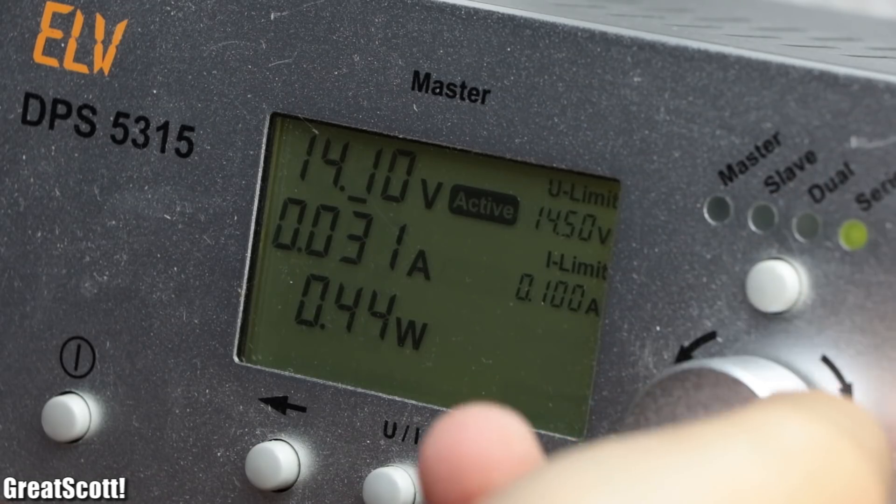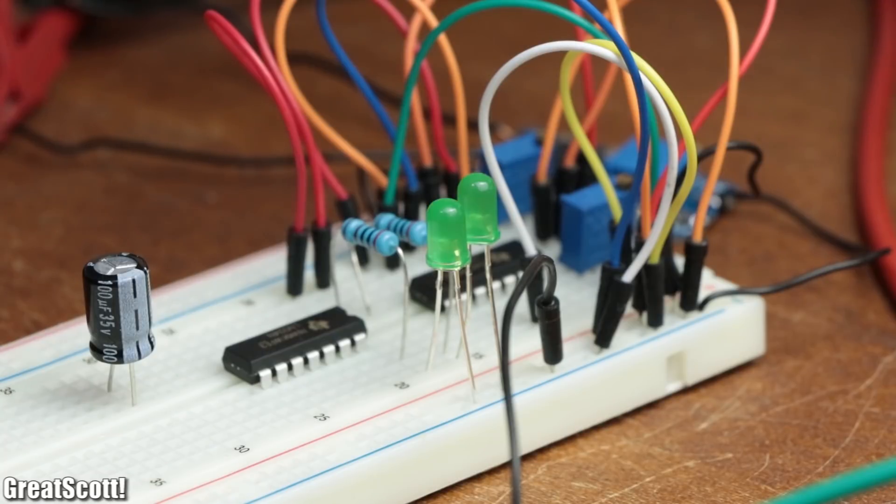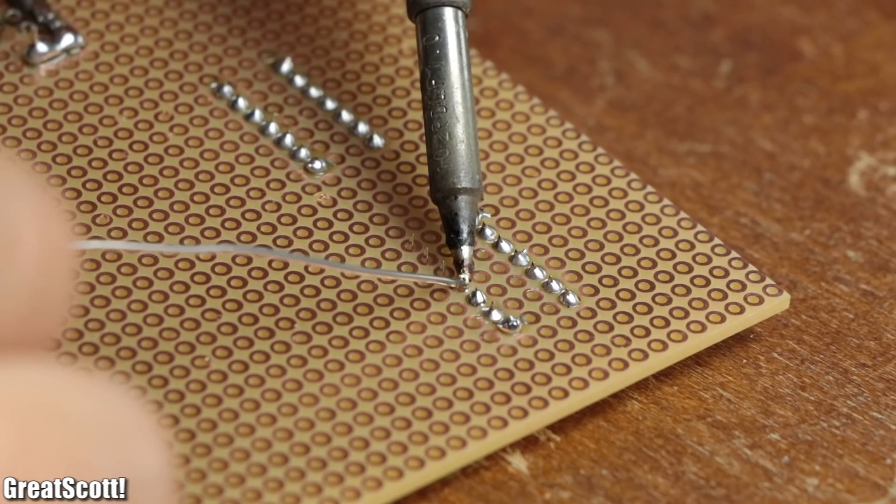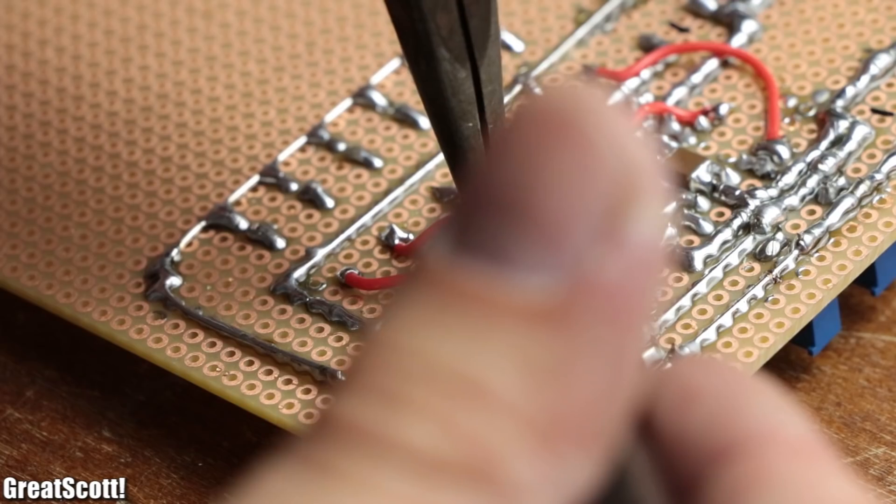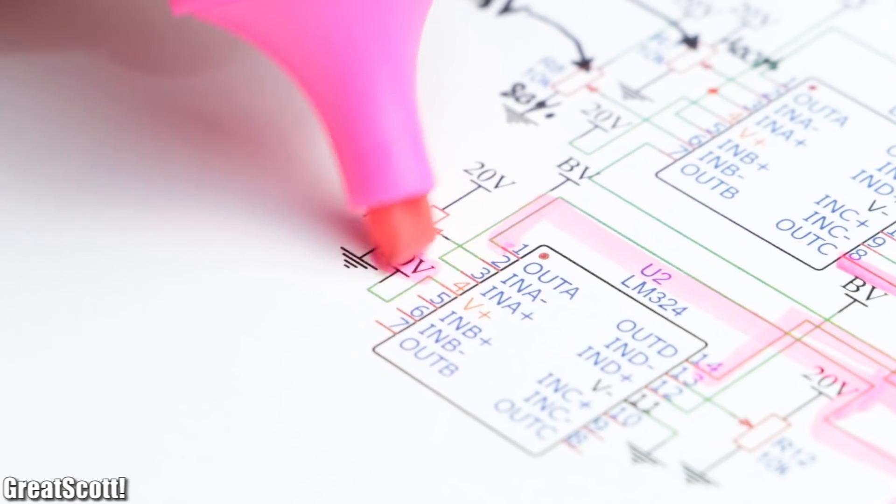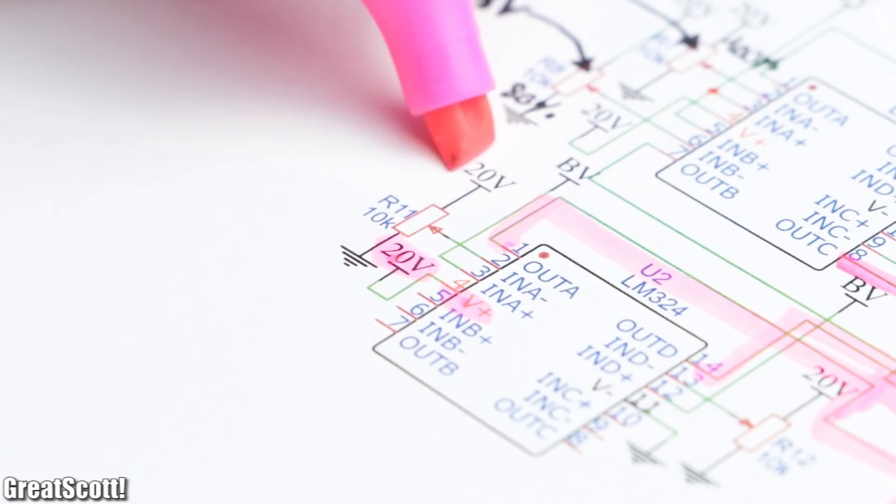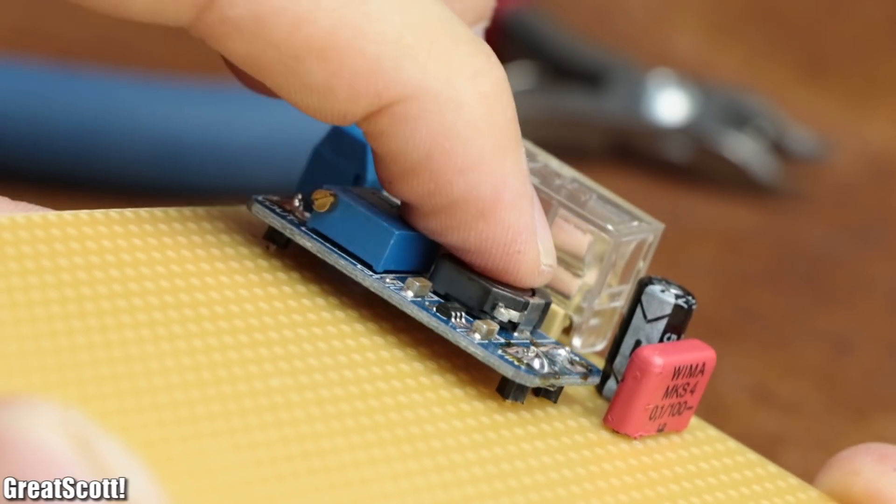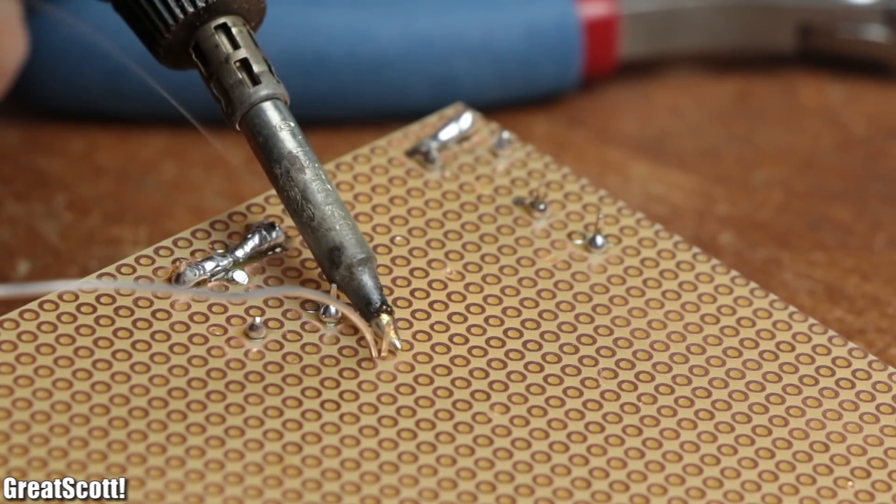And after I did a small proof of concept test on a breadboard, I went ahead and soldered all the required components to a piece of perfboard and connected them to one another according to the schematic. To create the constant 20 volts for the power and the trigger voltages, I also utilized a small boost converter module which I directly soldered to the perfboard.